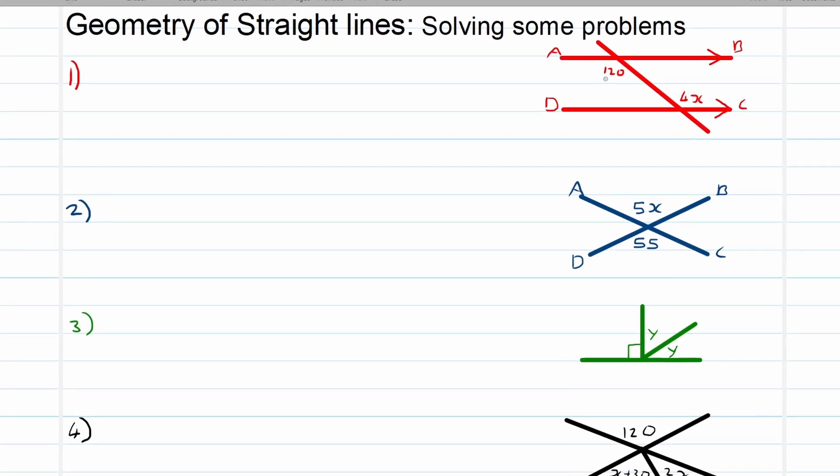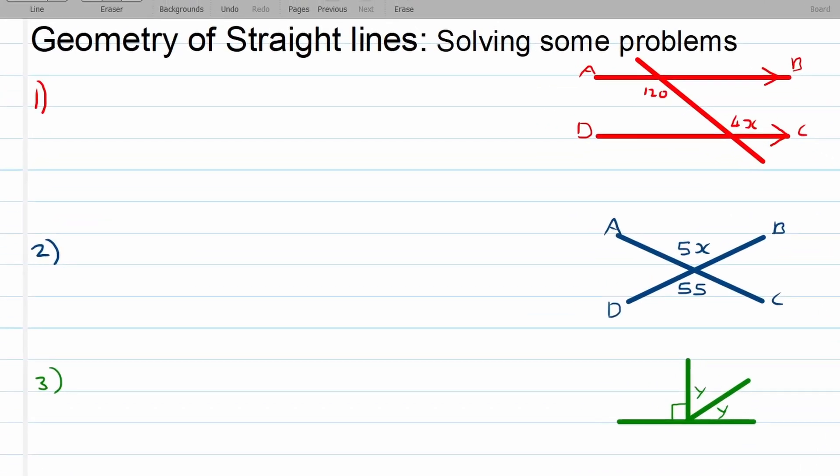You can see here that's a 4x and that's a 120. Okay, so you will be very quick to identify, hopefully here, that we've got alternating angles. Now remember, these two are alternating angles, right?